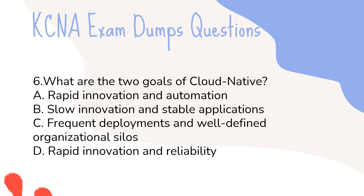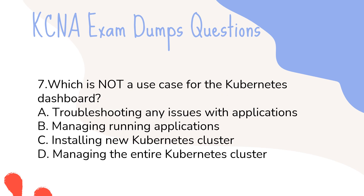Question 6: What are the two goals of cloud-native? A. Rapid innovation and automation. B. Slow innovation and stable applications. C. Frequent deployments and well-defined organizational silos. D. Rapid innovation and reliability.